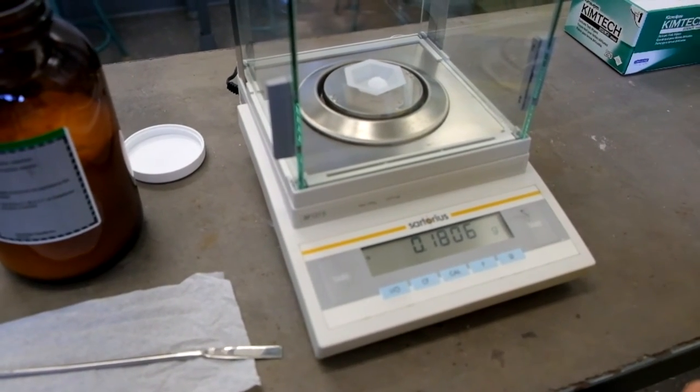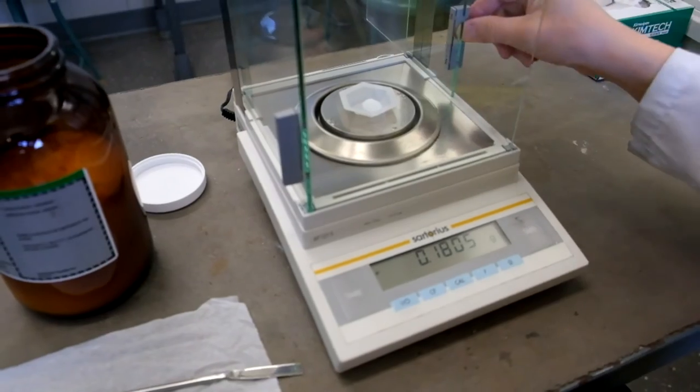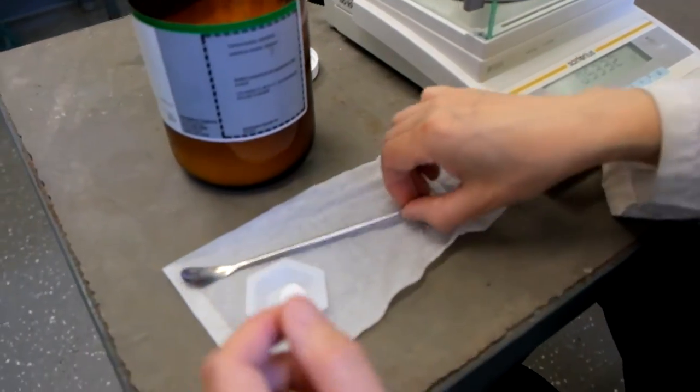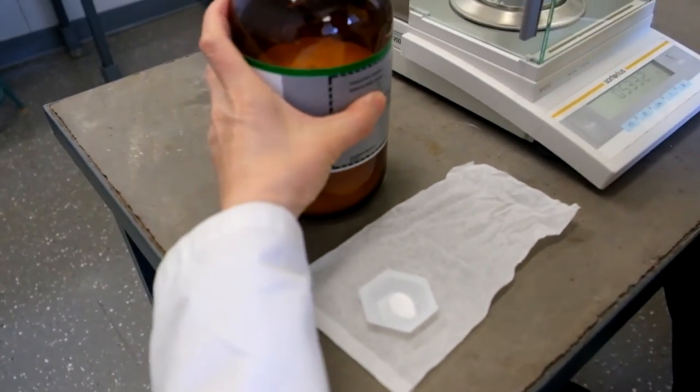Since we are aiming between 0.65 to 0.70 grams, we will need to take the weigh boat out of the balance chamber and add more sodium acetate to the weigh boat.